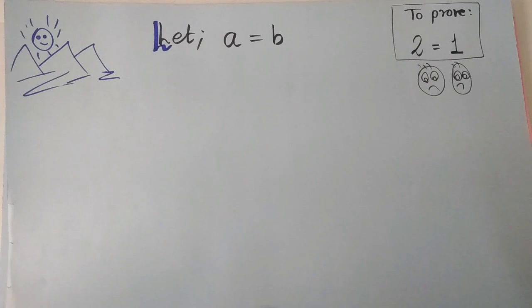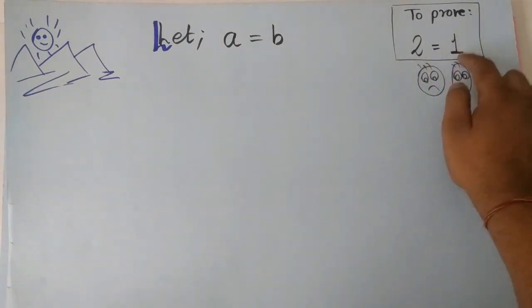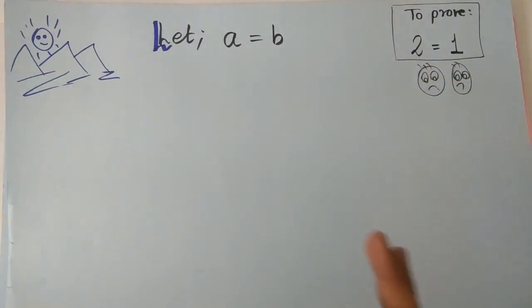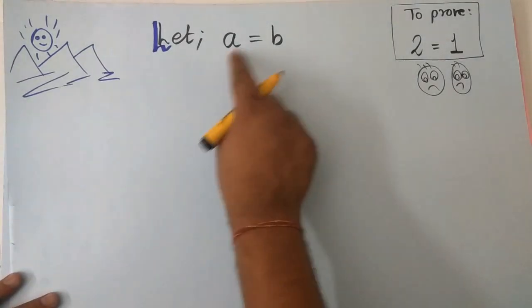Welcome to the live account. Now we are going to prove that two equals one. Let's see who can find the mistake. If you are able to find the mistake, comment your answer. Let's take a equal to b.